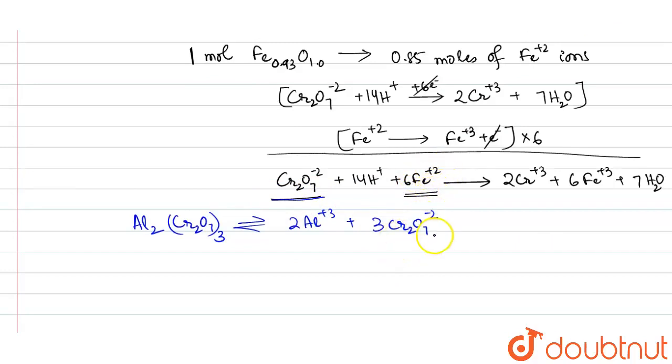So the amount of aluminum dichromate we have is 0.158 moles.